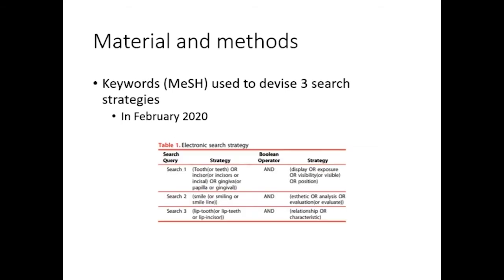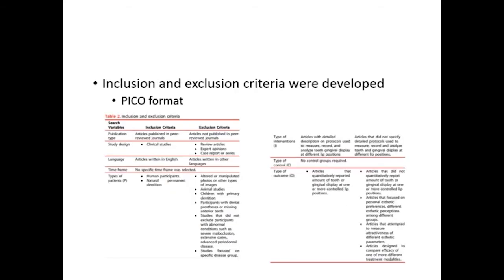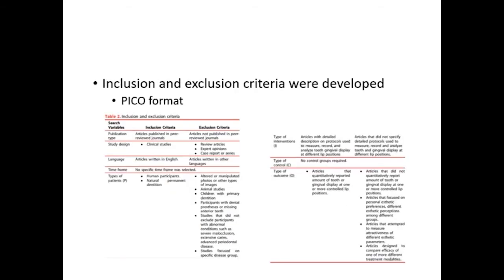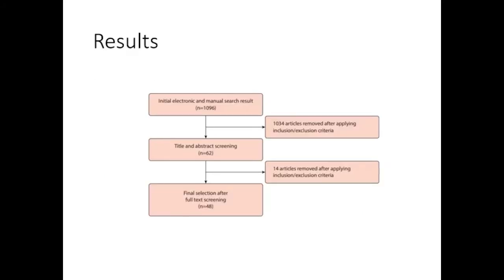Keywords with medical subject heading terms were used to devise three search strategies that were entered into an open-source electronic database in February 2020. Inclusion and exclusion criteria were developed based on the population, intervention, control, and outcome format, and 11 studies were selected. The initial search identified a total of 196 studies, and 48 articles were selected for review.